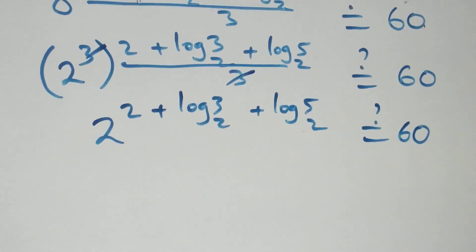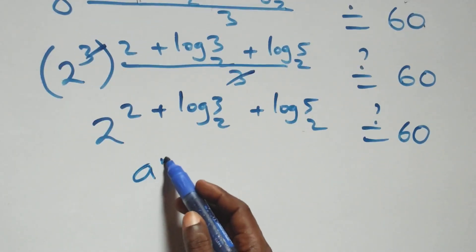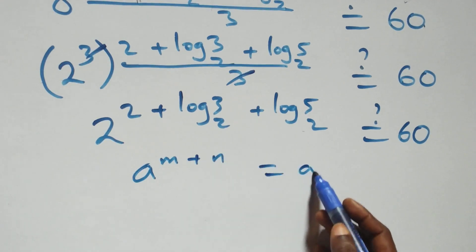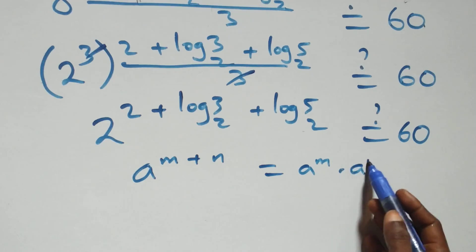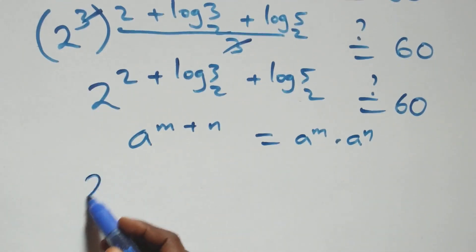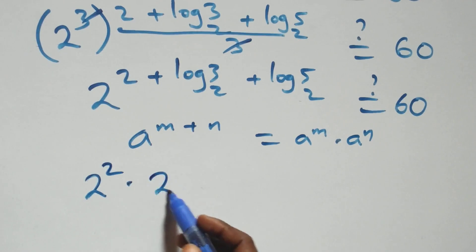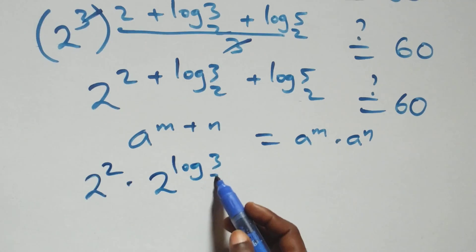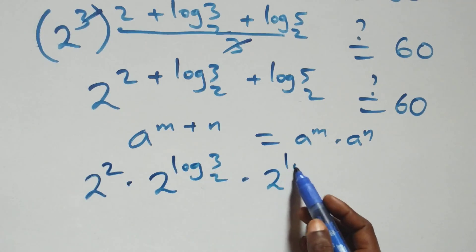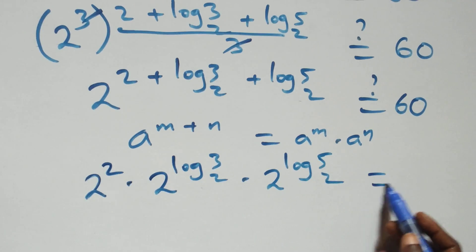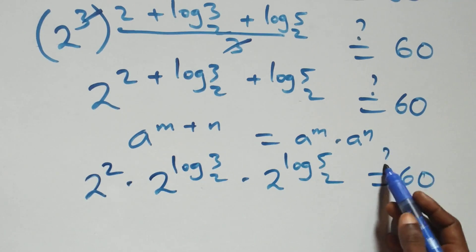This follows from the law of indices: when we have a raised to power (n plus m), it equals a^n times a^m. So here we have 2 squared times 2 raised to power log 3 base 2, times 2 raised to power log 5 base 2, which should equal 60.